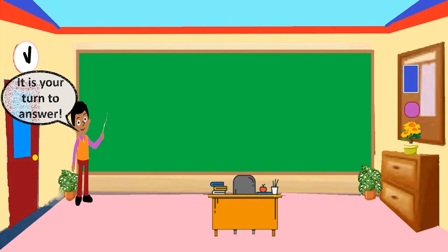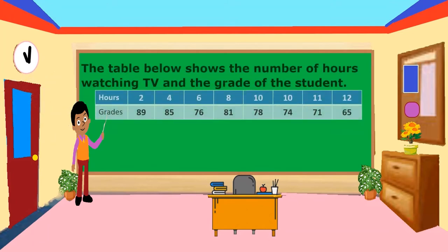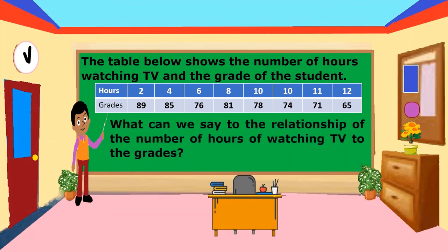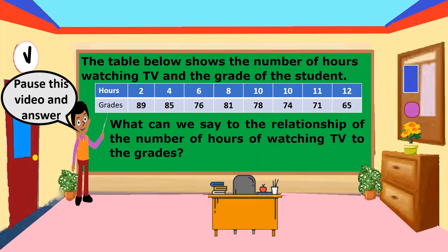It is your turn to answer. The table below shows the number of hours watching TV and the grades of students. We have 8 students with hours: 2, 4, 6, 8, 10, 10, 11, and 12; and grades: 89, 85, 76, 81, 78, 74, 71, 65. What can we say about the relationship of the number of hours of watching TV to the grades? Pause this video and answer.